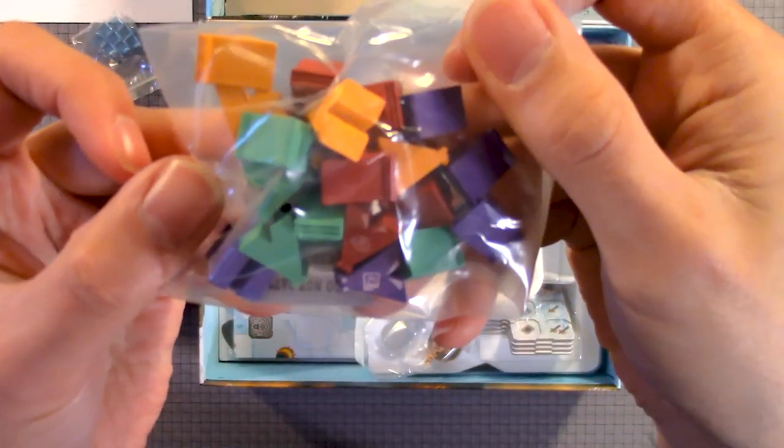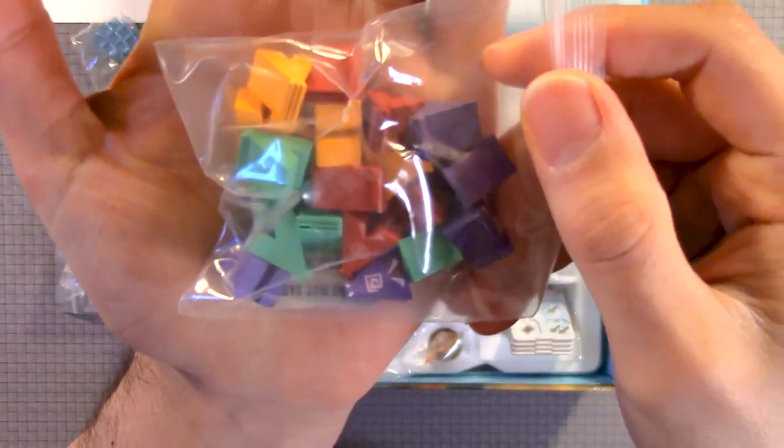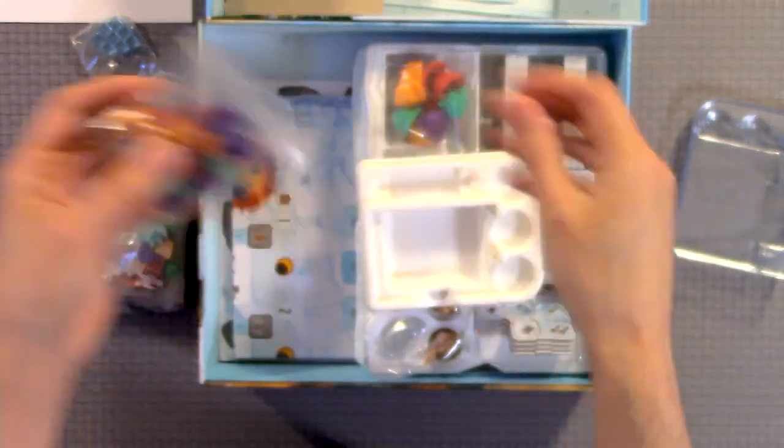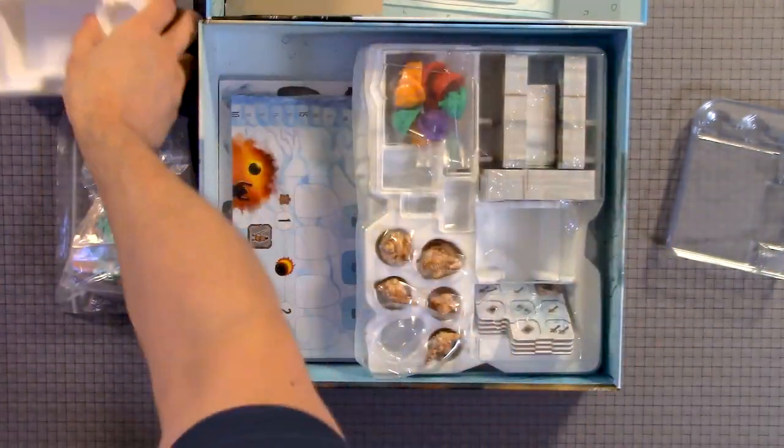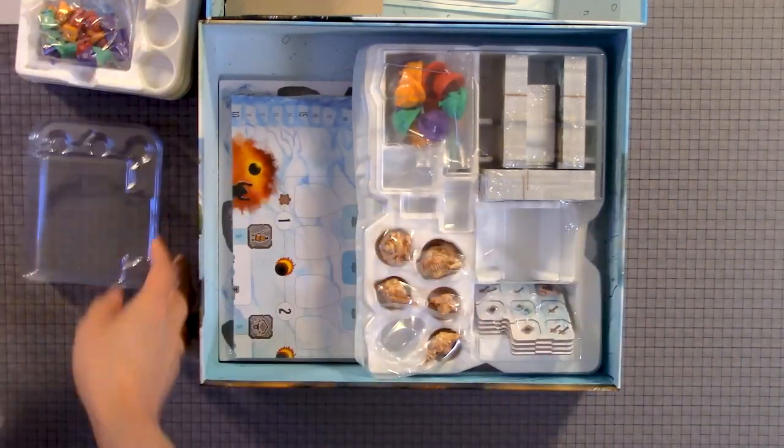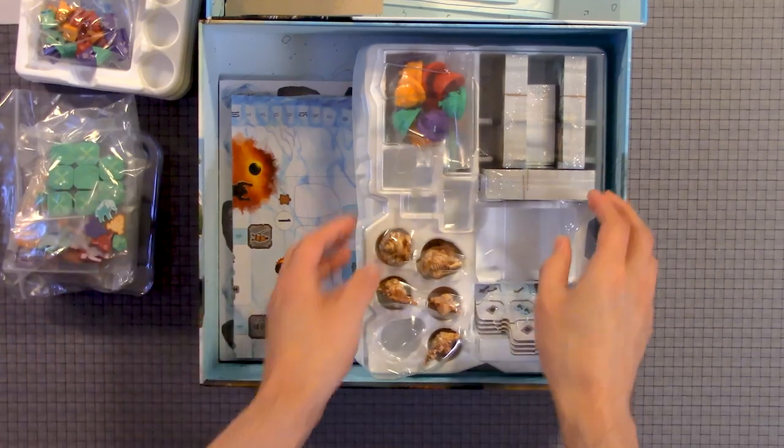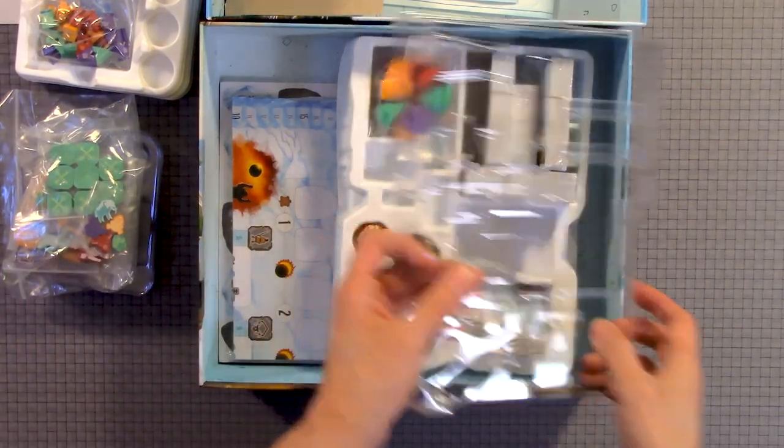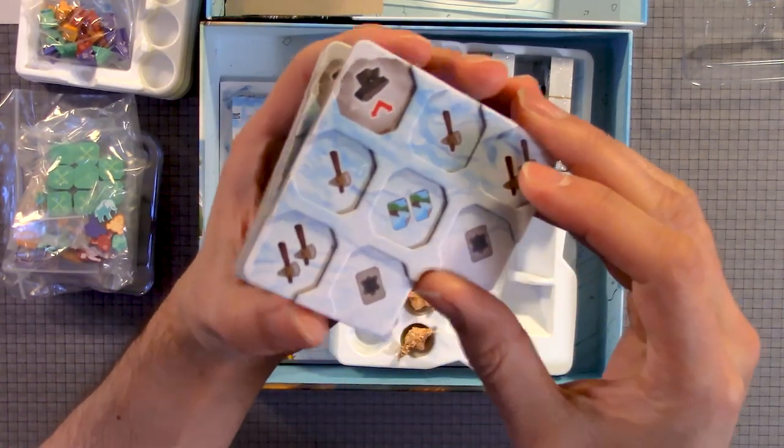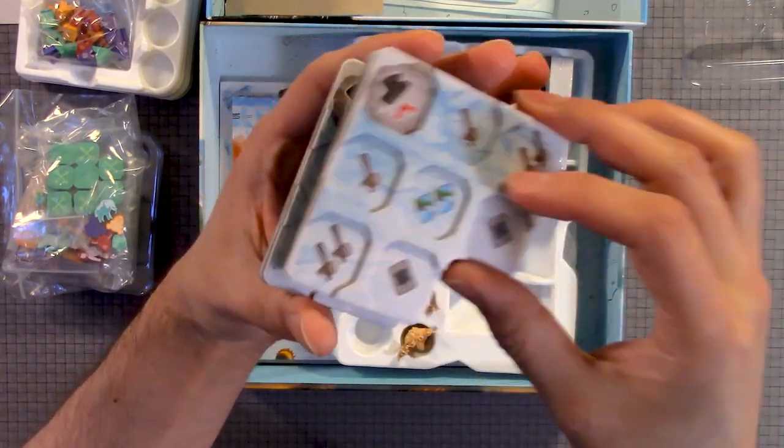Here you have little tents in green, red, purple, and orange. And here we have some dual-layered boards.